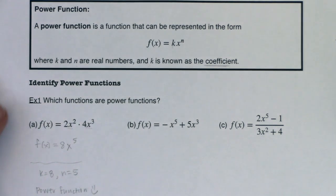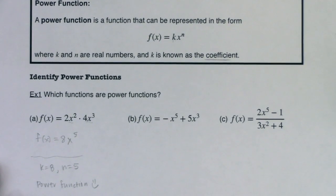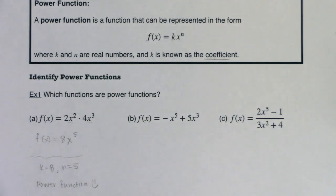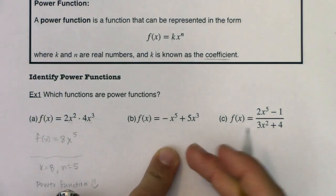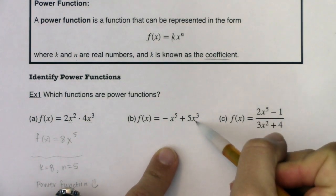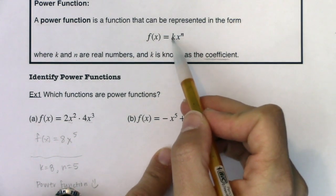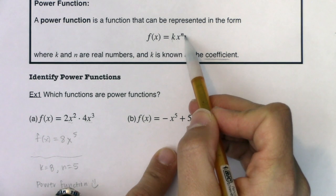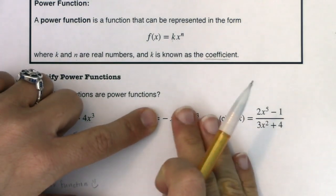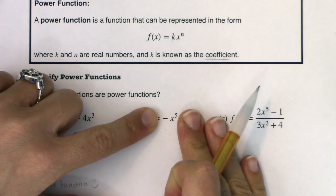Since I told you that only one of these functions - let me scooch this up just a bit - is a power function, you can tell these next two are not going to be. But especially for part b, there might be a question as to why is this not a power function. It's not a power function because there are two terms here. In order to be a power function, you have solely the one term, just k times x to the n.